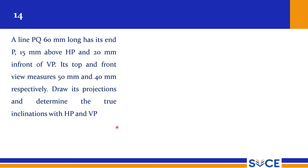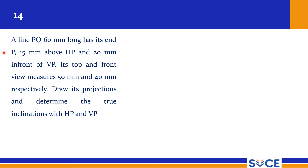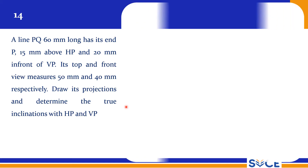but very easy to solve. A line PQ 60mm long has its end P, 15mm above HP and 20mm in front of VP. Its top and front view measures 50mm and 40mm respectively. Draw its projections and determine the true inclinations with HP and VP. We need to find its true inclinations, so theta and phi.